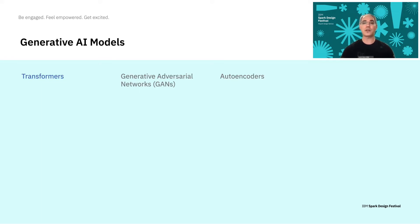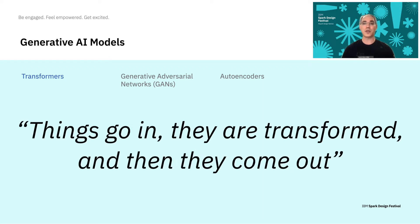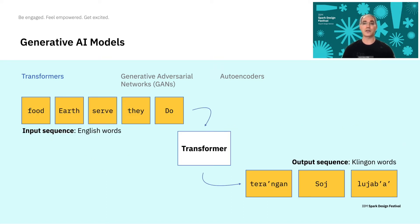Let's start with transformer models. The easiest way to think about these models is that things go in, they're transformed, and then things come out. Visually it looks like this — here we have a sequence of English words going into the model, they get transformed into another language like Klingon, then they come out as a sequence of Klingon words.